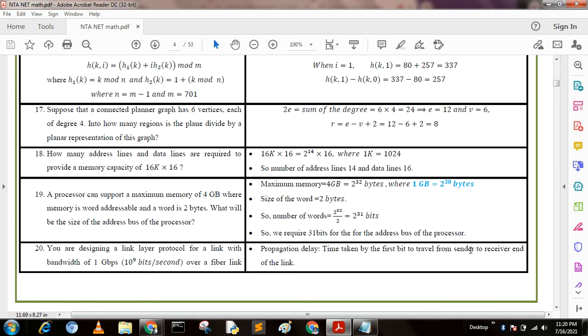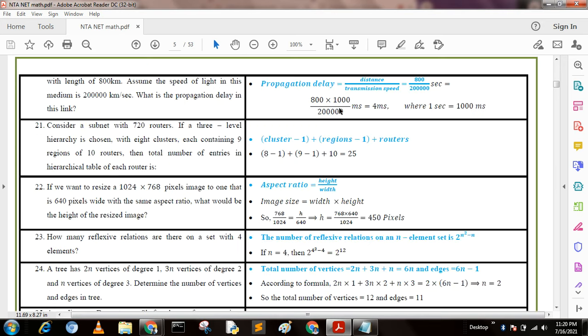What is the propagation delay of the link? Propagation delay means time taken by the last bit to travel from sender to receiver end of the link. From the formula, propagation delay = distance / speed, we get 800 / 200,000 seconds. Converting to milliseconds, we get 4 milliseconds.